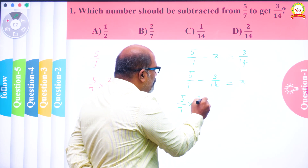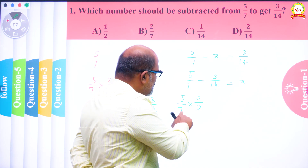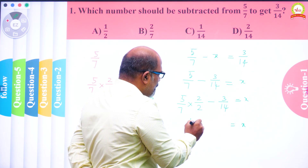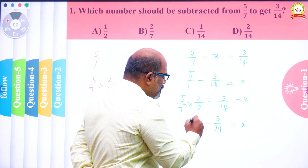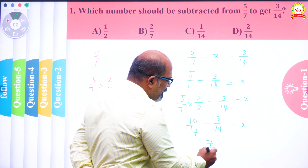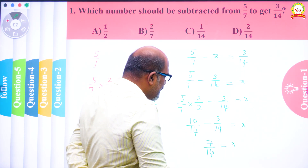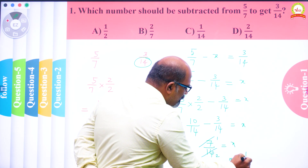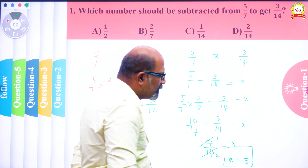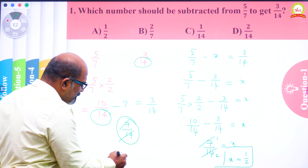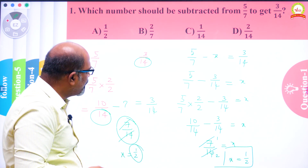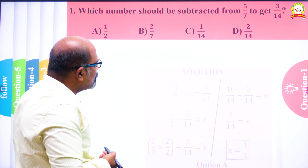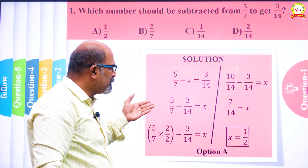Multiplying 5/7 by 2 in numerator and denominator gives 10/14. So x equals 10/14 minus 3/14, and 10 minus 3 is 7, giving 7/14. This simplifies further: 7 divides into both 7 and 14, so x equals 1/2. By either method — thinking or algebraic — the answer is 1/2. The printed solution also shows the algebraic method giving the same result.